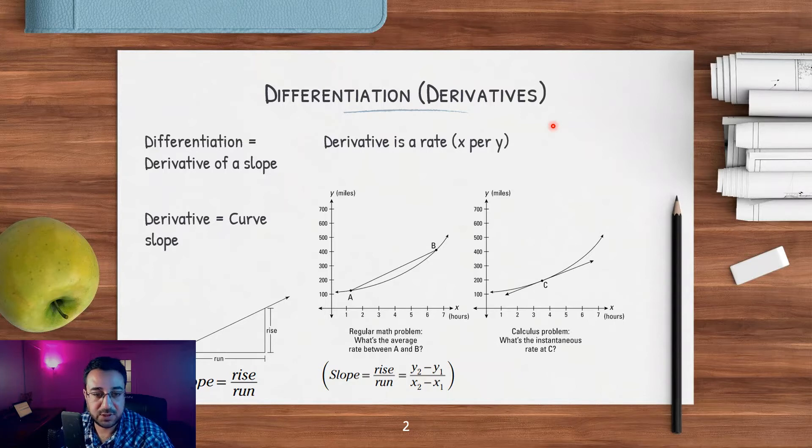As we mentioned before, either how the position of the box is changing or how the force is changing with time or distance. So differentiation is the derivative of a slope, and derivative is only a fancy name associated with calculus to mean the curve slope - how steep is that curve.